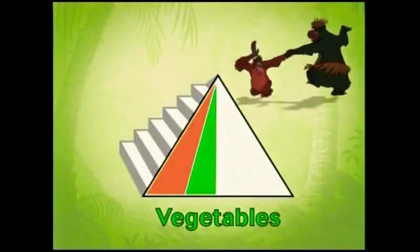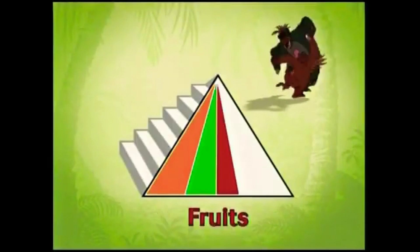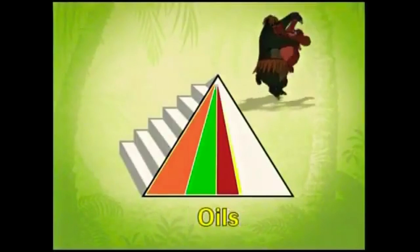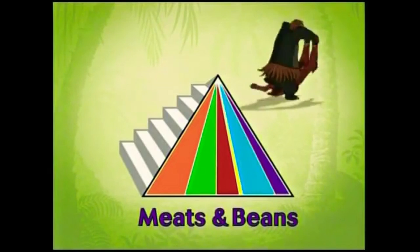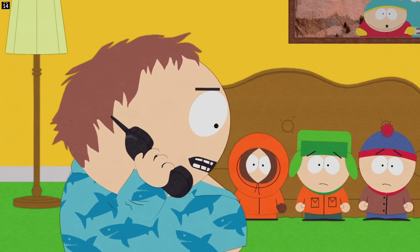Food pyramids are simple visual guides to the types and proportions of food we should supposedly eat in order to stay healthy. While food pyramids vary according to diets and cultures, the basic idea behind them is the same: foods at the base should be consumed in larger quantities and foods at the top should be consumed rarely. Unless, of course, you're in the middle of a gluten epidemic — it's upside down.